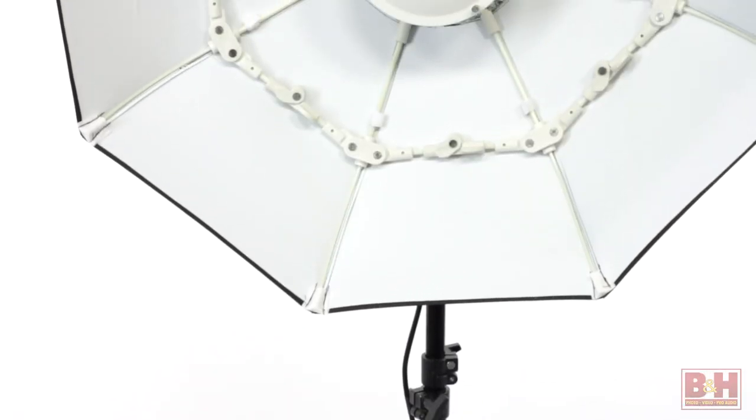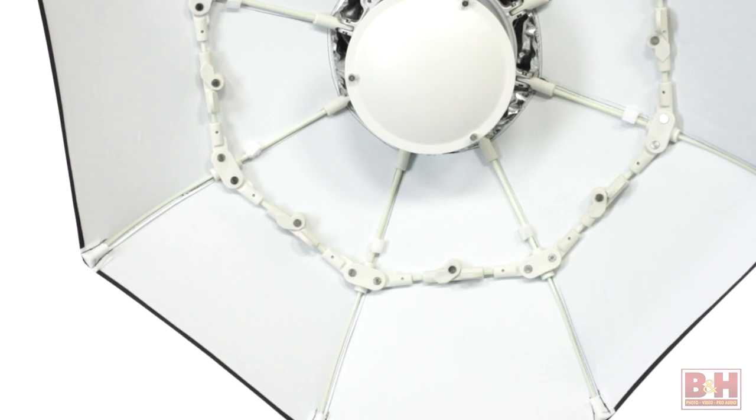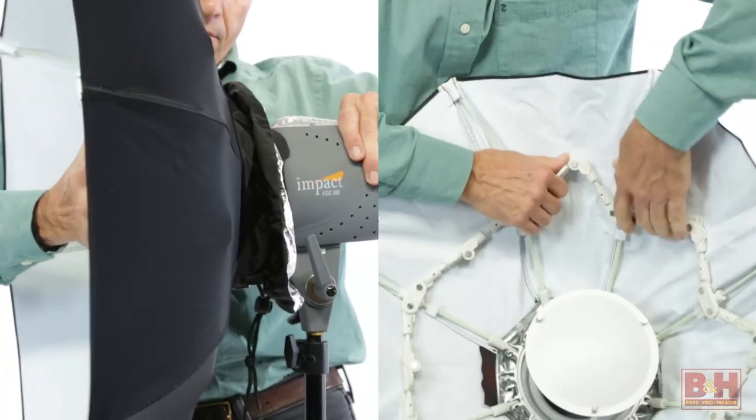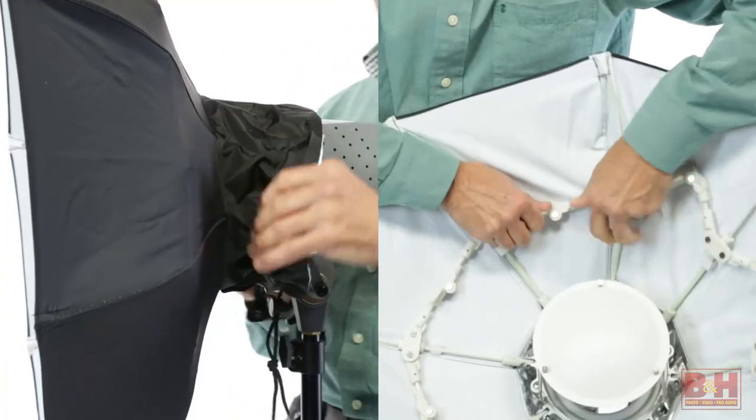Made of a white, heat-resistant soft box material, the Fotix Luna features an internal support system that snaps into place in a matter of seconds. Once opened and mounted onto your favorite studio light, the Fotix Luna outputs the same familiar soft light that portrait and beauty photographers expect from the Beauty Dish.